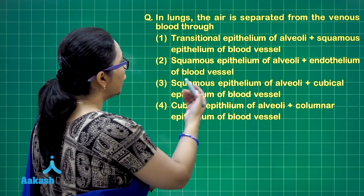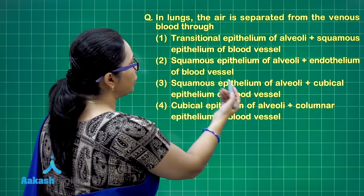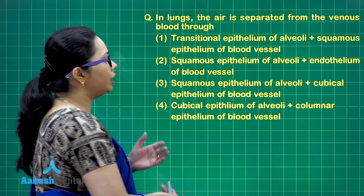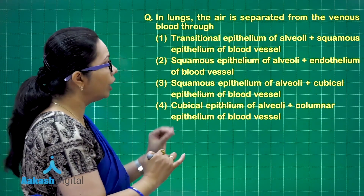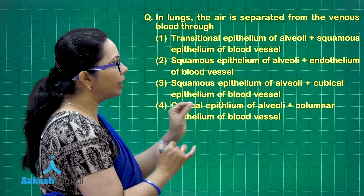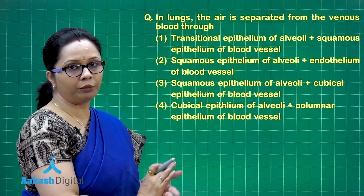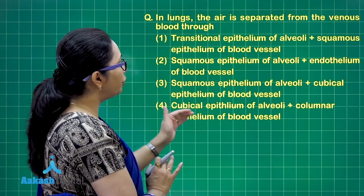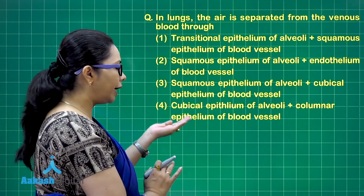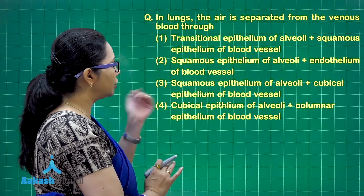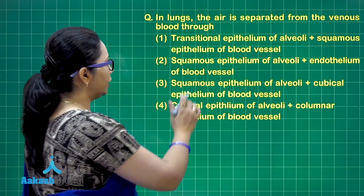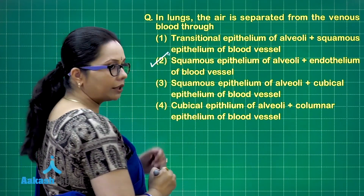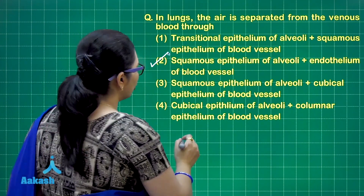Squamous epithelium of alveoli plus cuboidal epithelium of blood vessels is wrong because capillaries are lined by simple squamous epithelium called endothelium. Cuboidal epithelium of alveoli is also incorrect because it is simple squamous epithelium. The correct answer is option 2.